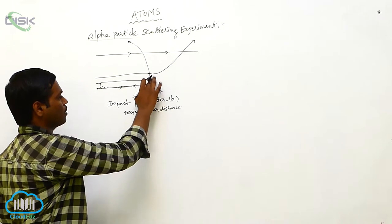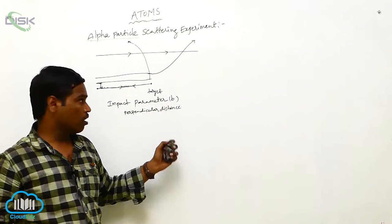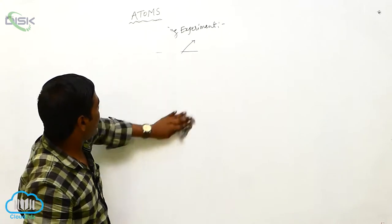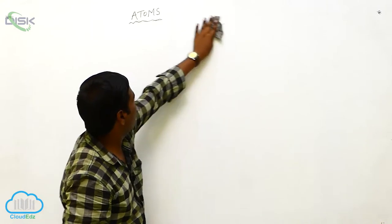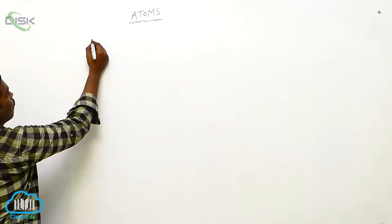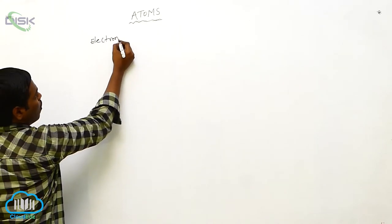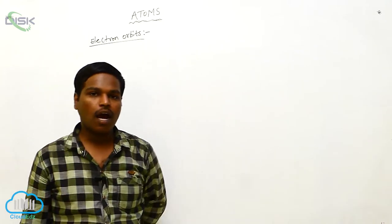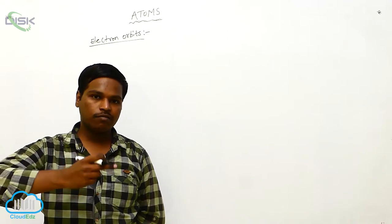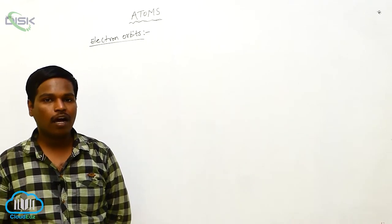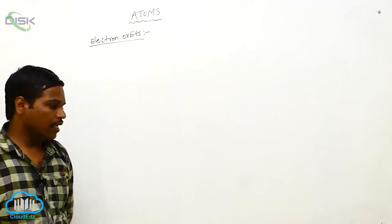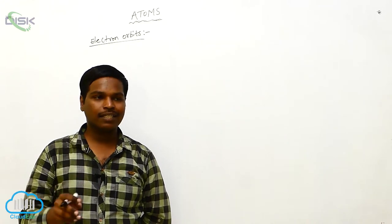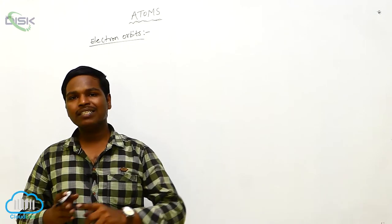This completes the alpha particle trajectory discussion. Next, for electron orbits — we already know that electrons revolve around the nucleus in particular orbits. These are called electron orbits.